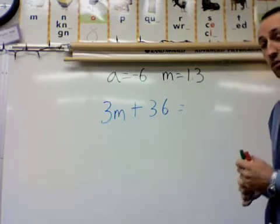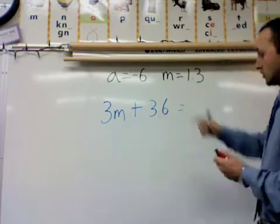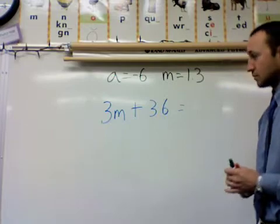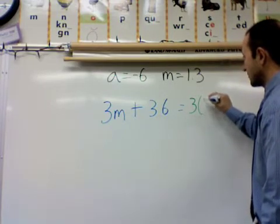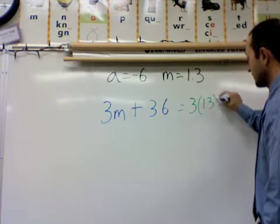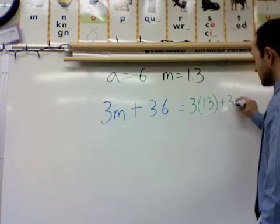First thing to do is rewrite it, replacing the letter with its numeric value. So this becomes 3 times 1.3 plus 3.6.